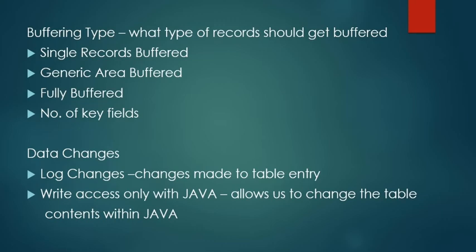The next is buffering type. It defines how and what types of records should get buffered. This has different types such as single records buffered, generic area buffered, fully buffered, and the number of key fields. This will be explained in our next session. This is just an overview of the technical settings tab under SE11.